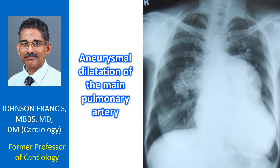Aneurysmal dilatation of the main pulmonary artery. Dilated left pulmonary artery shadow is seen within the contour of the dilated main pulmonary artery. Right pulmonary artery is also grossly dilated.